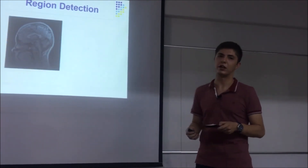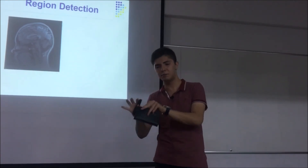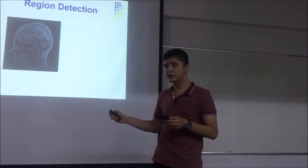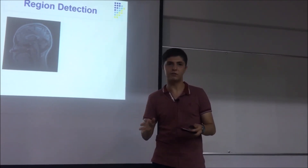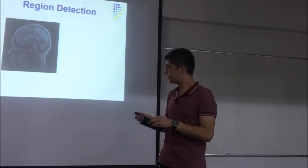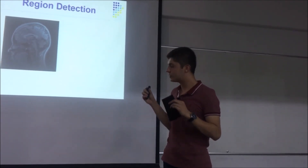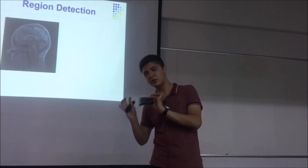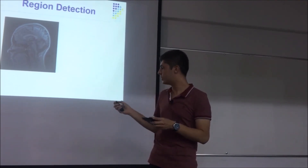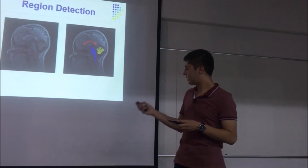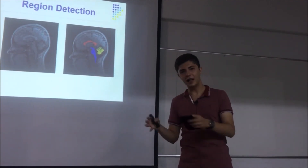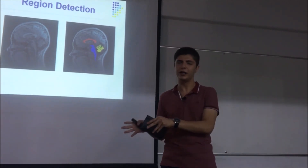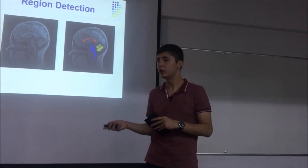Another technique is region detection, which is used to specify special regions. I have taken a photo of a human brain — the human brain is very complicated, as we all know. There are many regions, and doctors want to specialize on them. Using image processing, the special regions of the brain can be identified. This helps not only in the treatment process but also in the economic way.